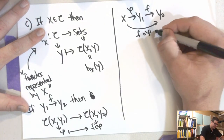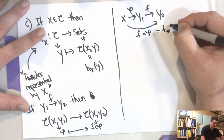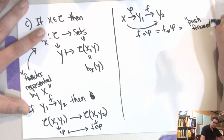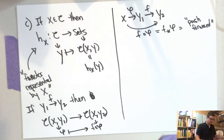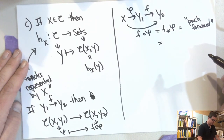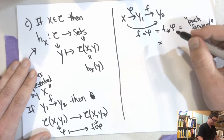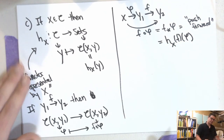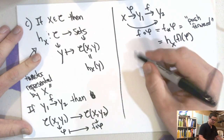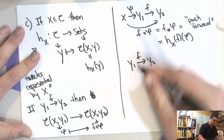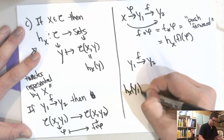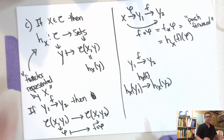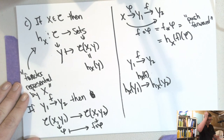So this is a functor — or in the other notation, H_X(f)(φ) = f ∘ φ. We had a map from Y₁ to Y₂ giving a map from H_X(Y₁) to H_X(Y₂), with H_X(f) operating on elements. These are called representable functors, and they'll be important later.